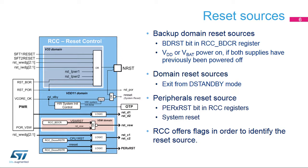The RCC offers a large choice of clock sources, which can be selected depending on low power, accuracy, and performance requirements. STM32H7 X3, X5, and X7 devices embed four internal RC oscillators: a high-speed internal RC oscillator (HSI) which can work at 64, 32, 16, or 8 MHz; a low-power internal RC oscillator (CSI) working at 4 MHz; an accurate RC oscillator working at 48 MHz; and a low-speed internal 32 kHz RC oscillator (LSI).